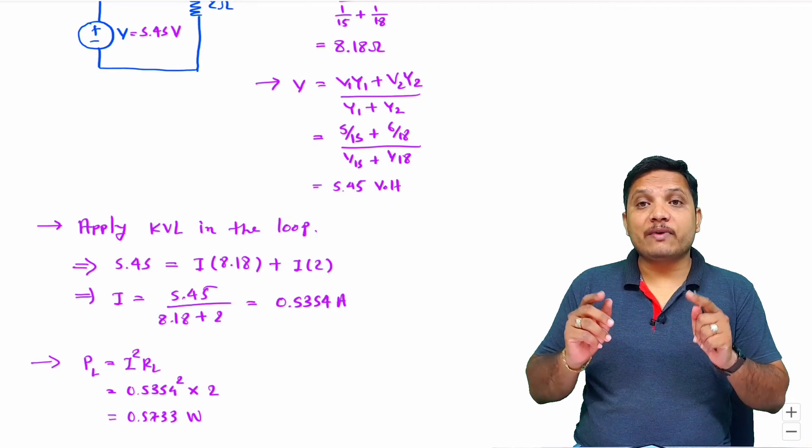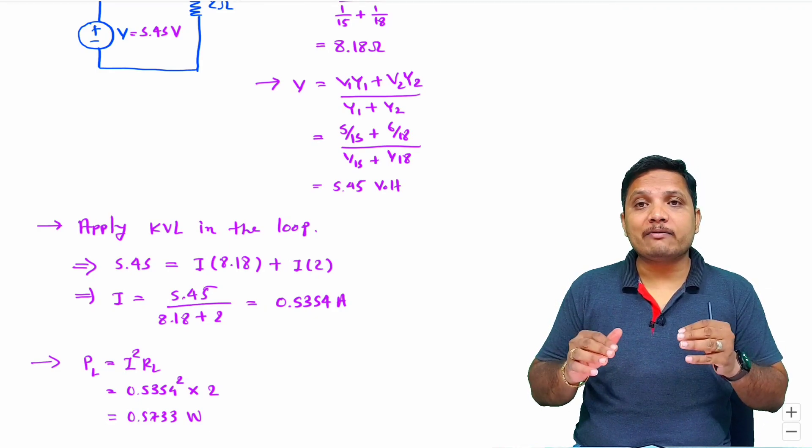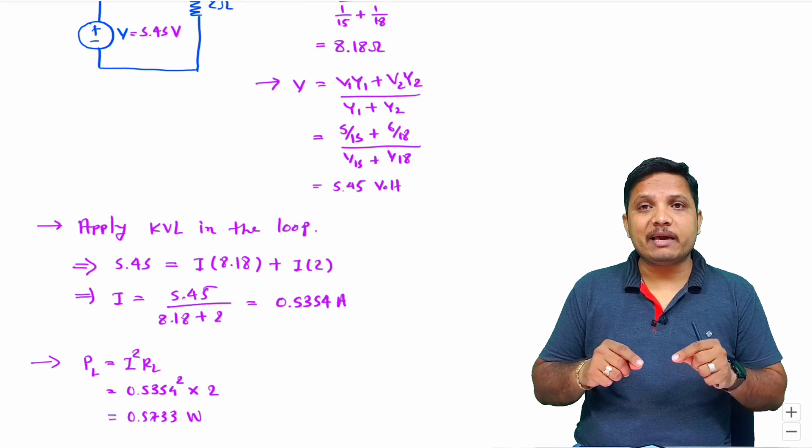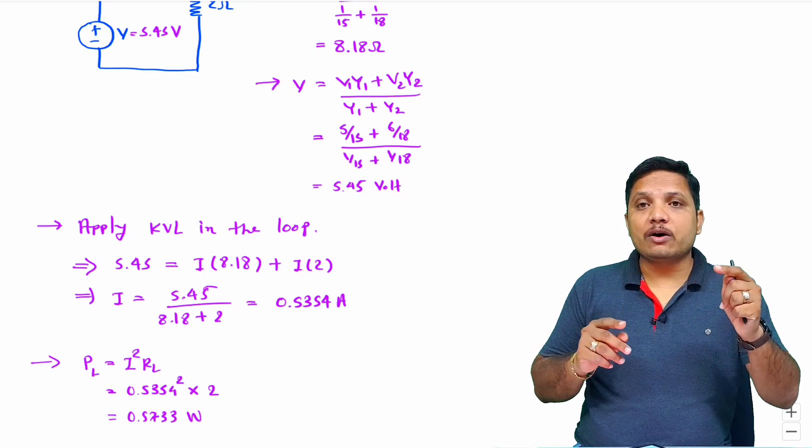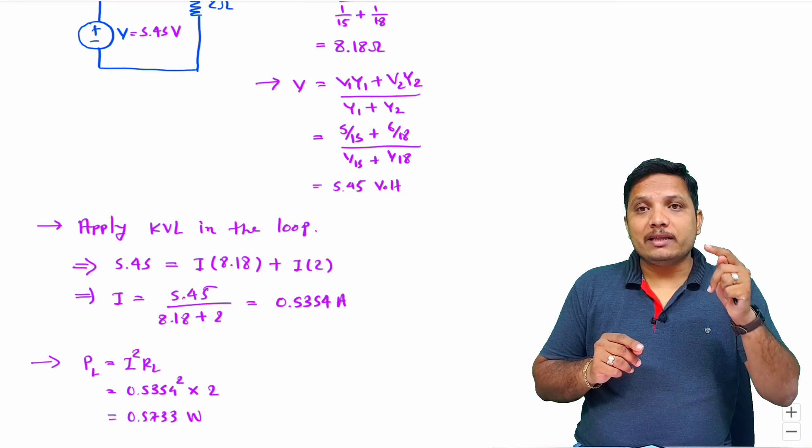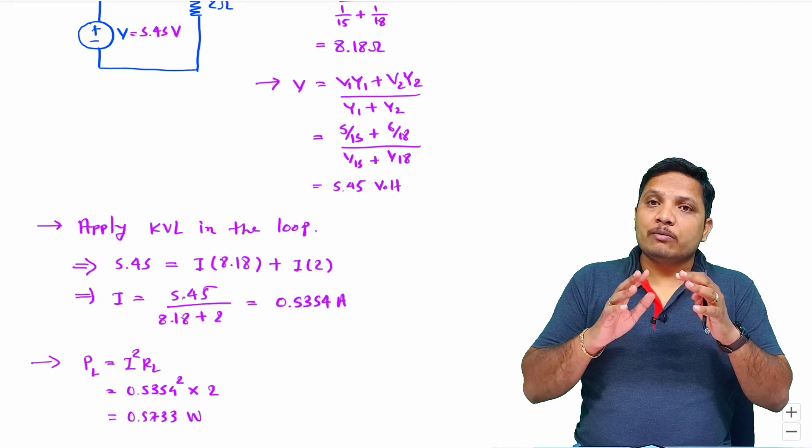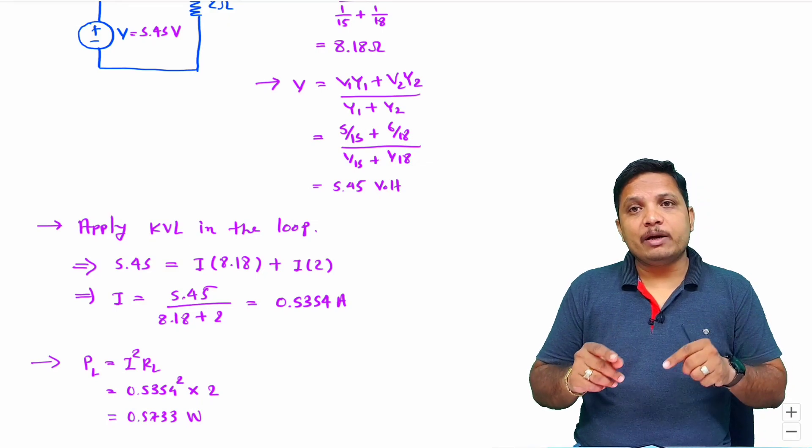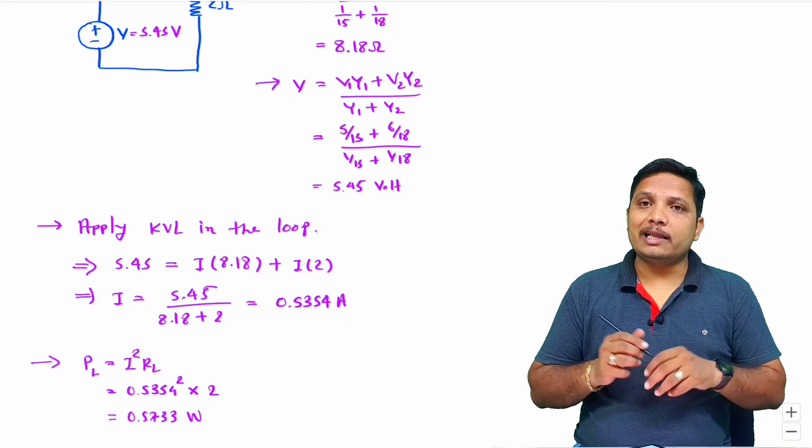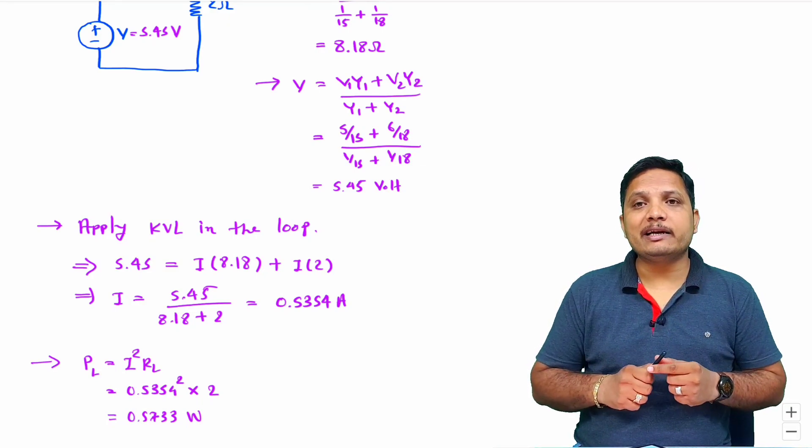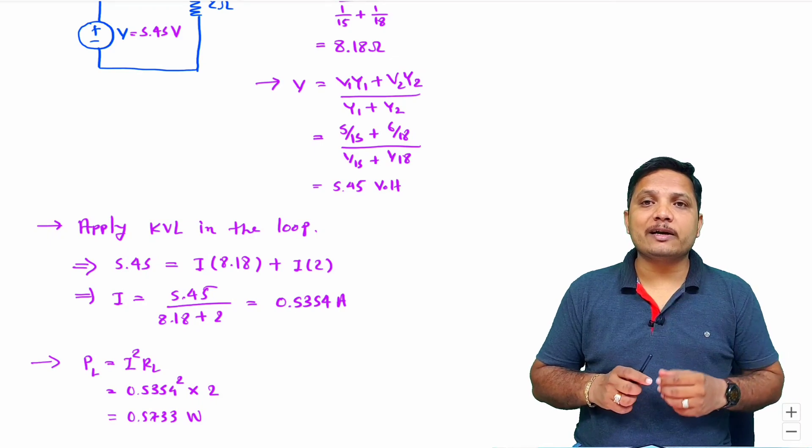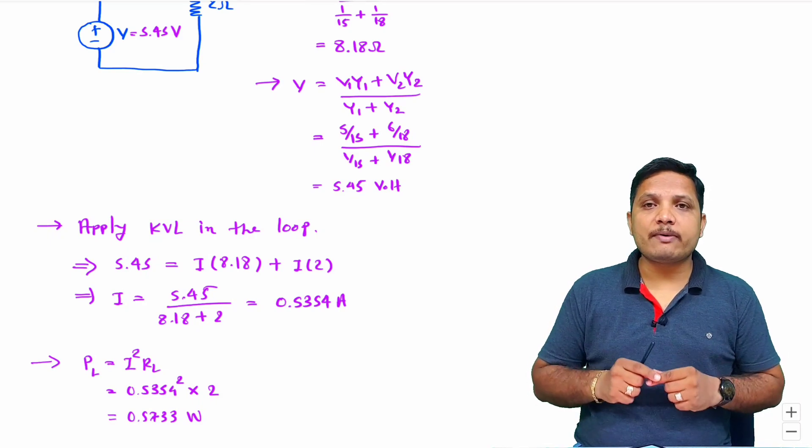So Millman's theorem is very useful to simplify networks very easily, but it is applicable for parallel combination of series of resistor with battery. It is not applicable to all types of networks, only this type. I will explain a few more examples related to Millman's theorem that will resolve your understanding furthermore. I hope you have understood this video.